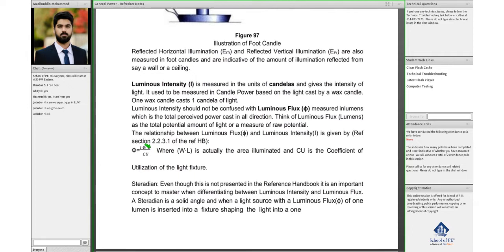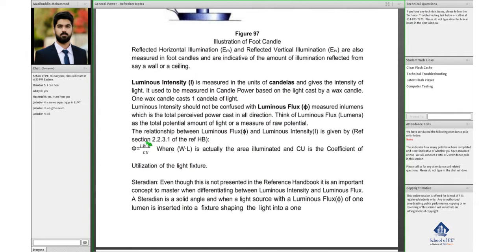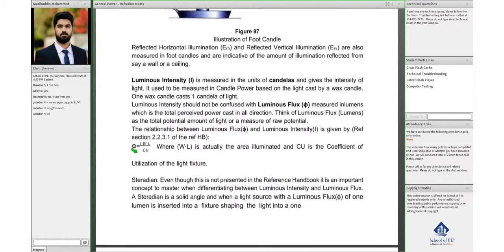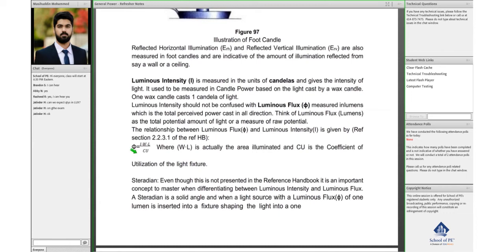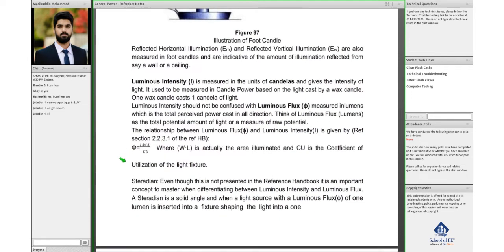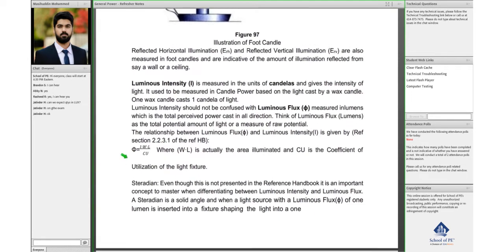W and L are the area of whatever is going to be illuminated, then it's divided by the coefficient of utilization. You can think of coefficient of utilization as how efficient a particular luminaire is, given as a percentage.